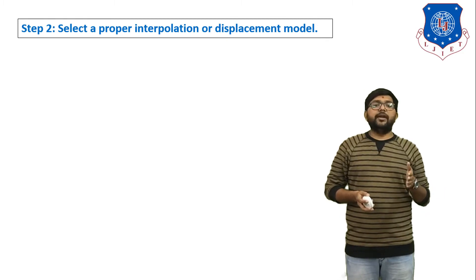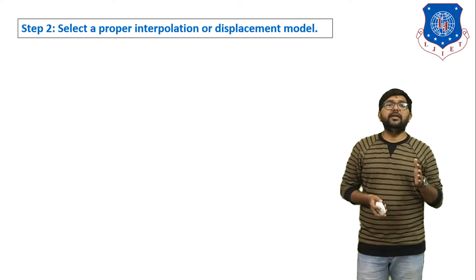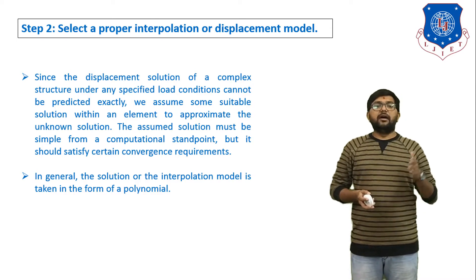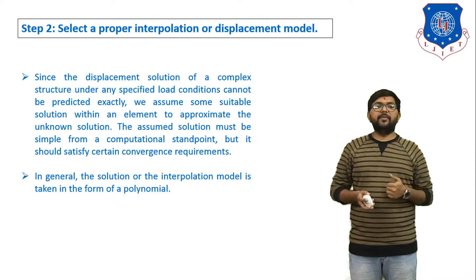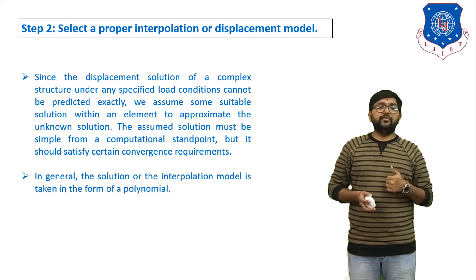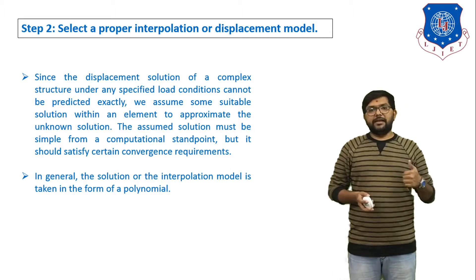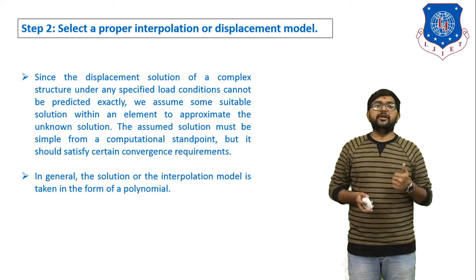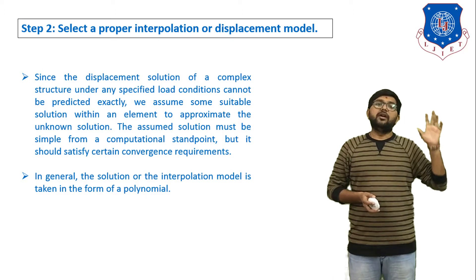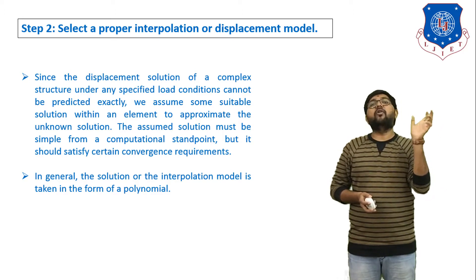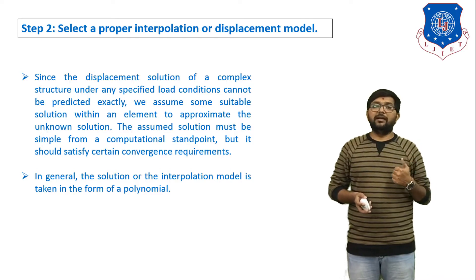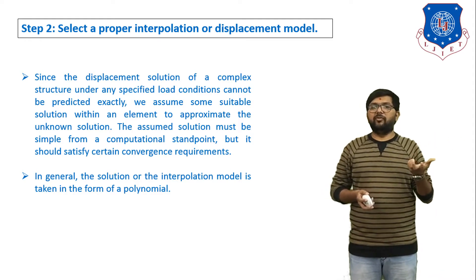Step number two: select a proper interpolation or displacement model. We have to decide on a displacement model. Since the displacement solution of a complex structure under any specified load condition cannot be predicted exactly, we have to assume a suitable displacement model. We assume some suitable solution within each element to approximate the unknown solution. The assumed solution must be simple from a computational standpoint but should satisfy certain convergence requirements. In general, the solution or interpolation model is taken in the form of a polynomial.